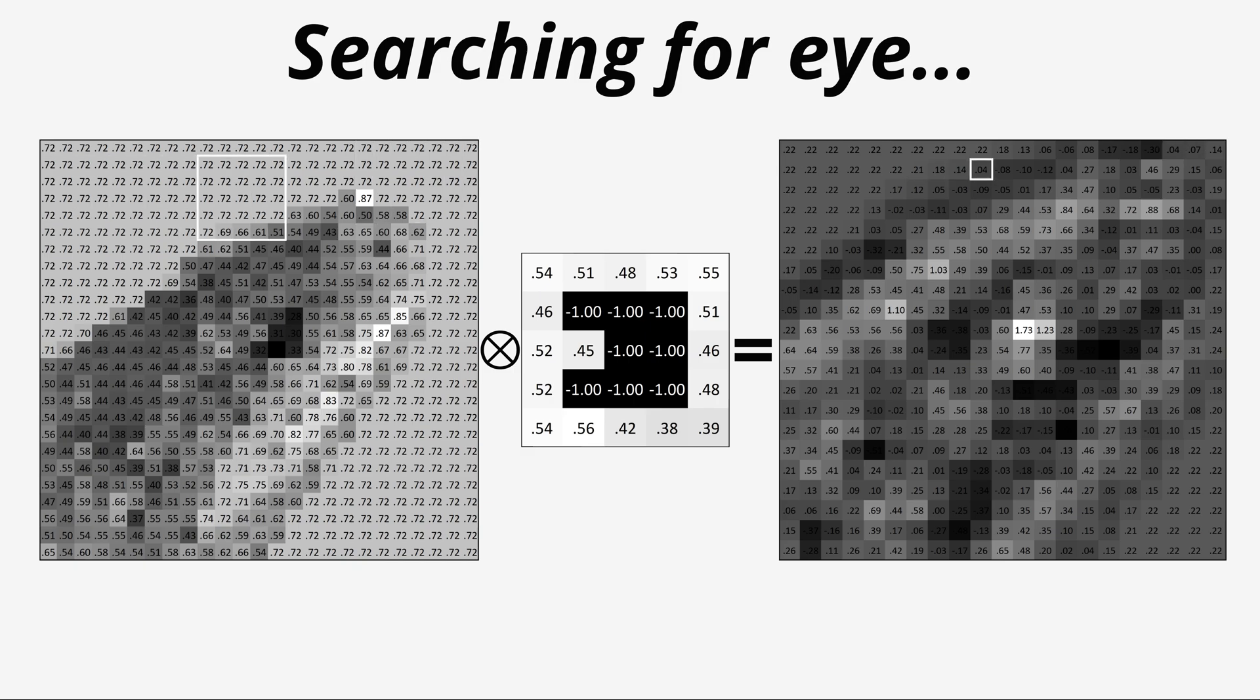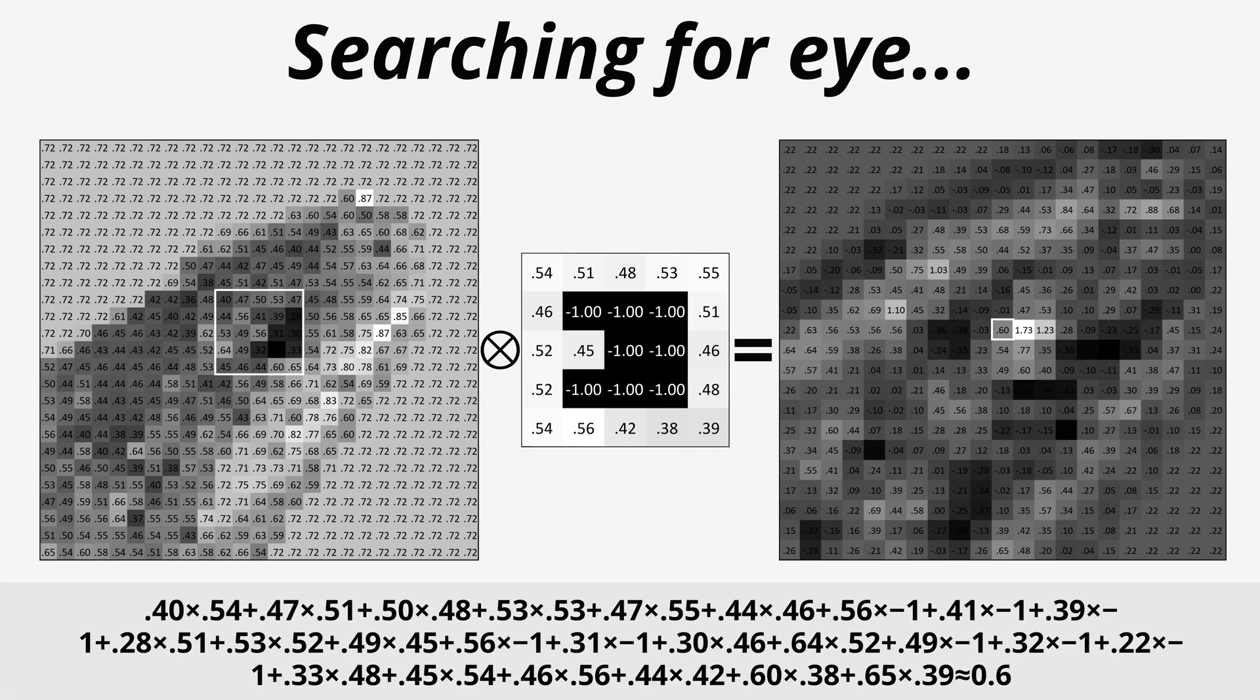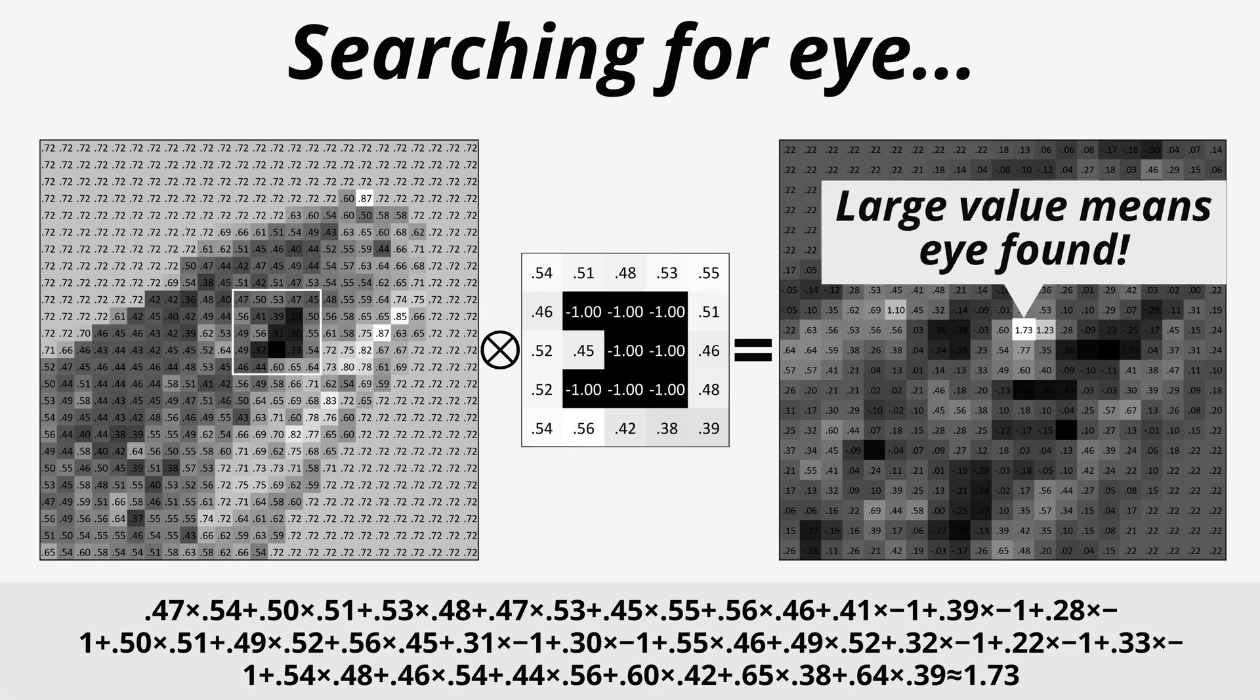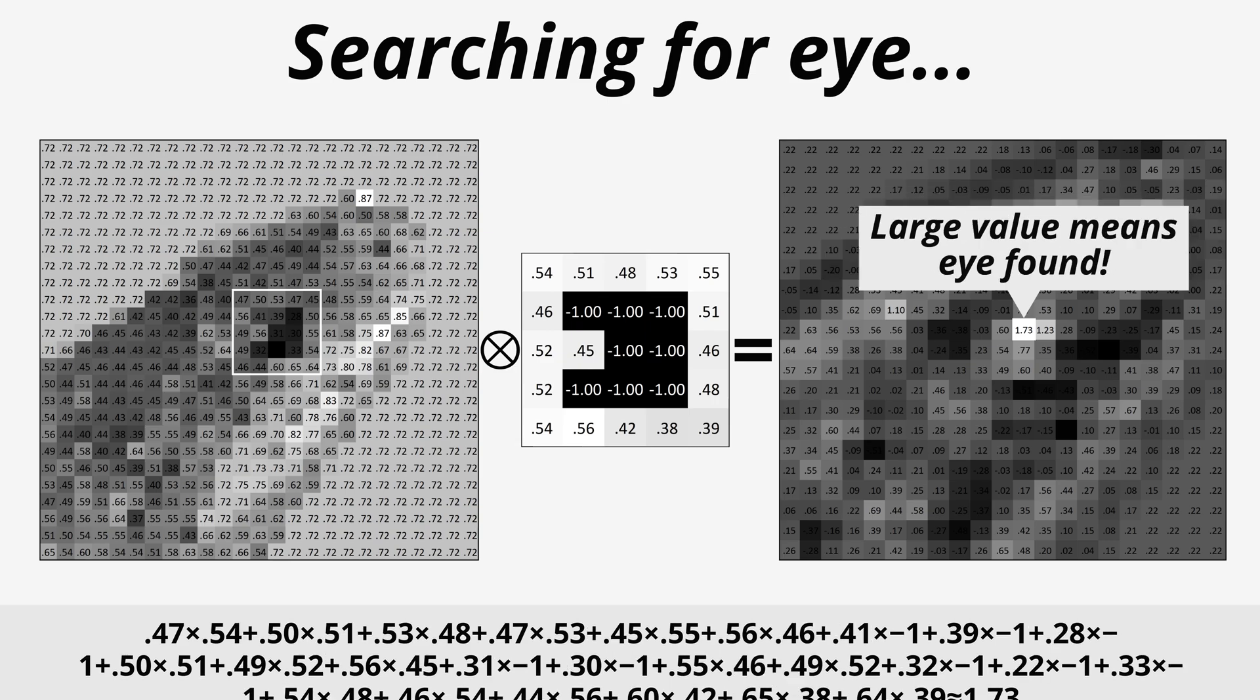Then, sections of numbers in the inputted image are repeatedly multiplied by grids of self-adjusting weights called filters, and each time the result is summed. When corresponding numbers match up, the resulting value is large, representing the presence of a feature.